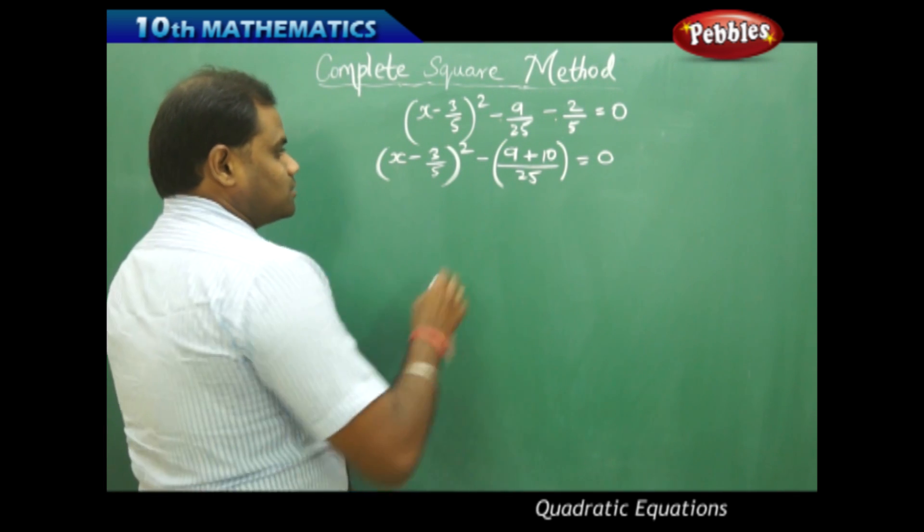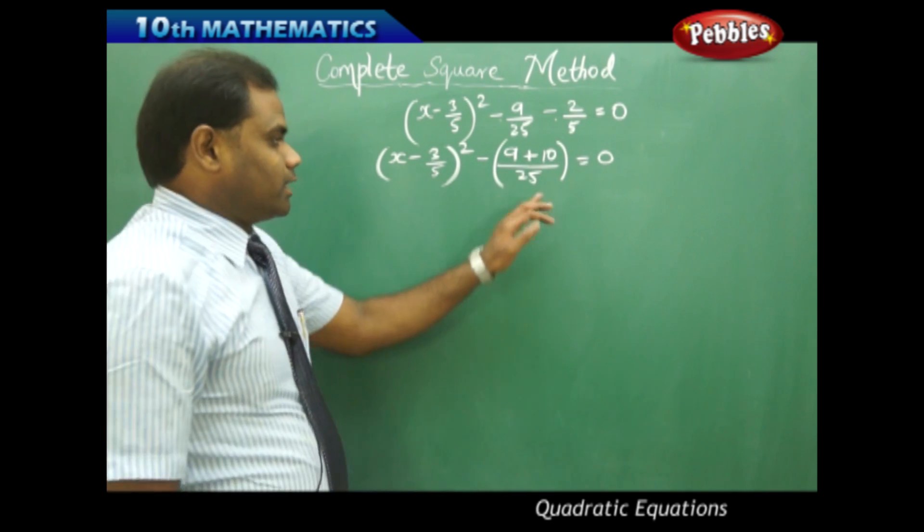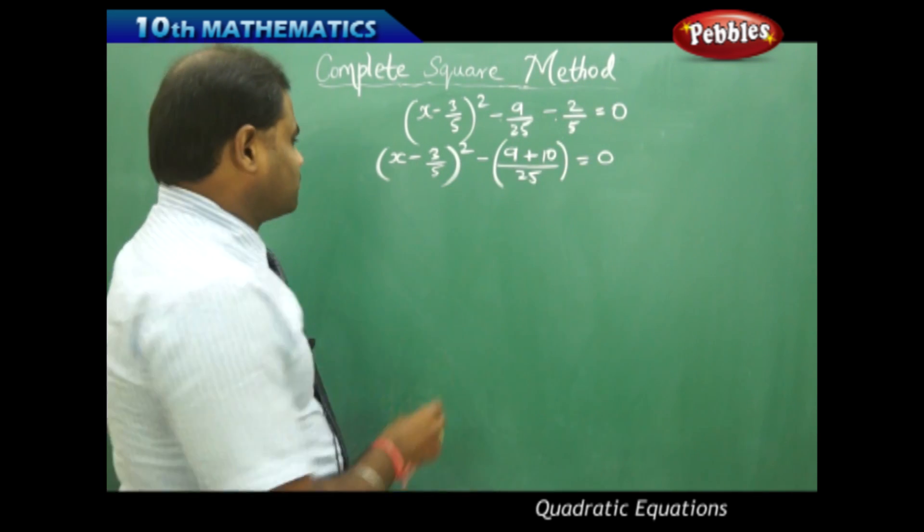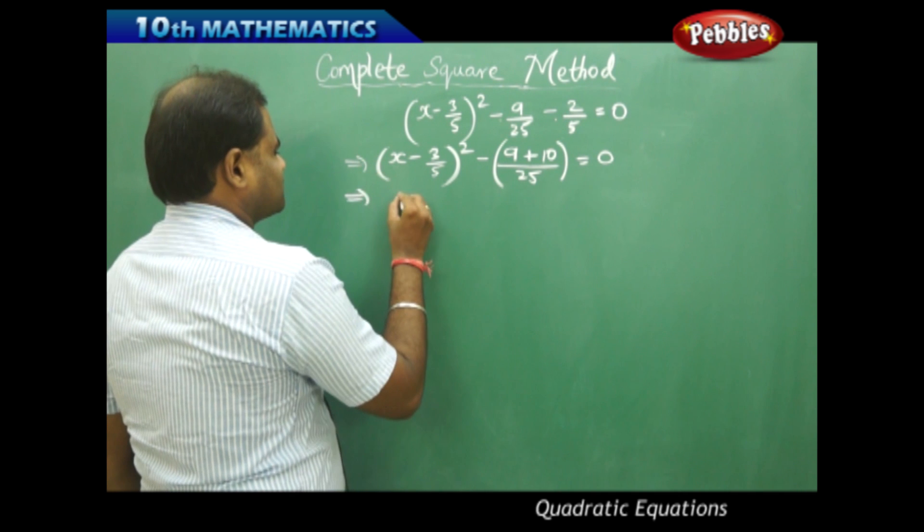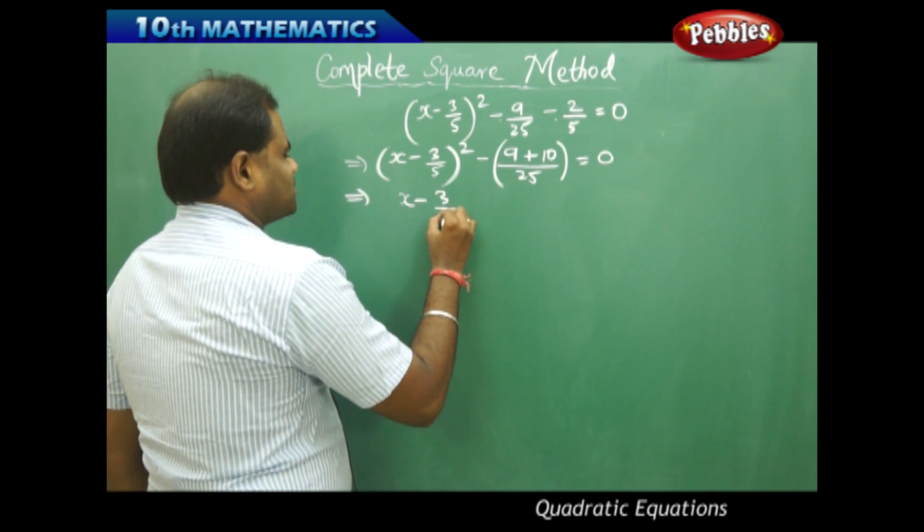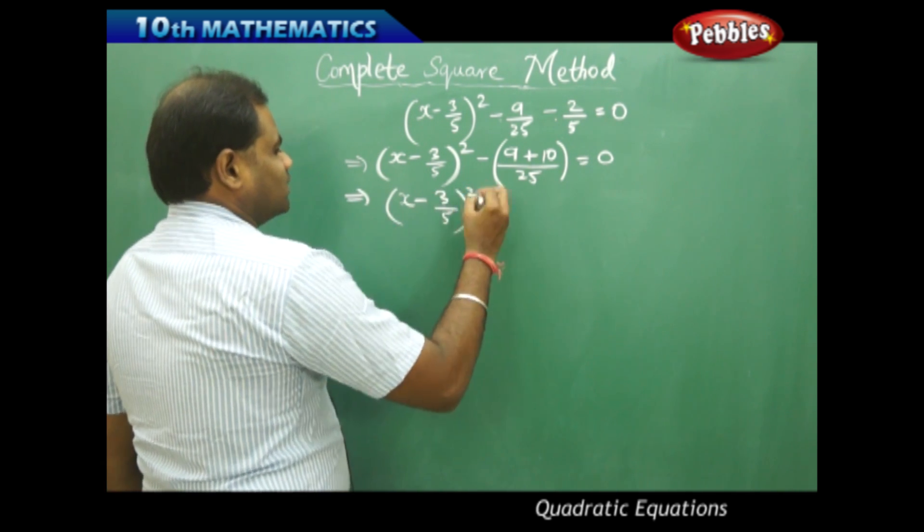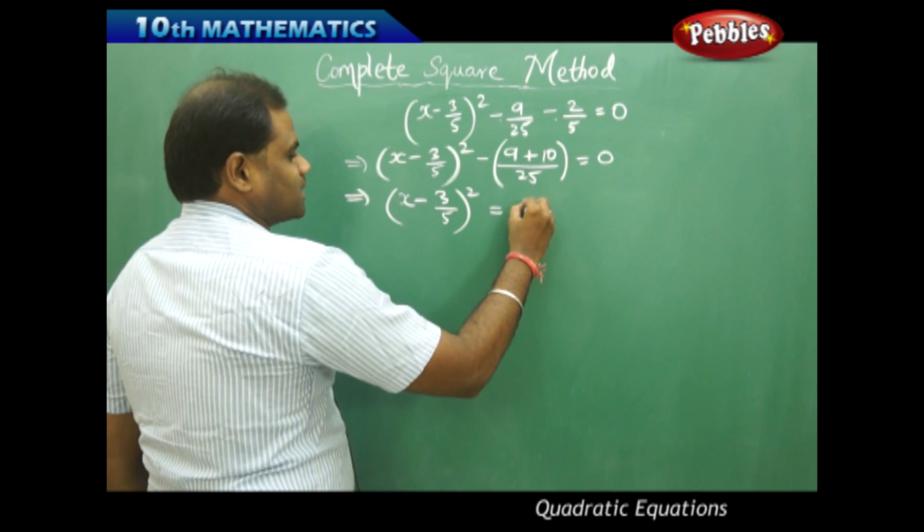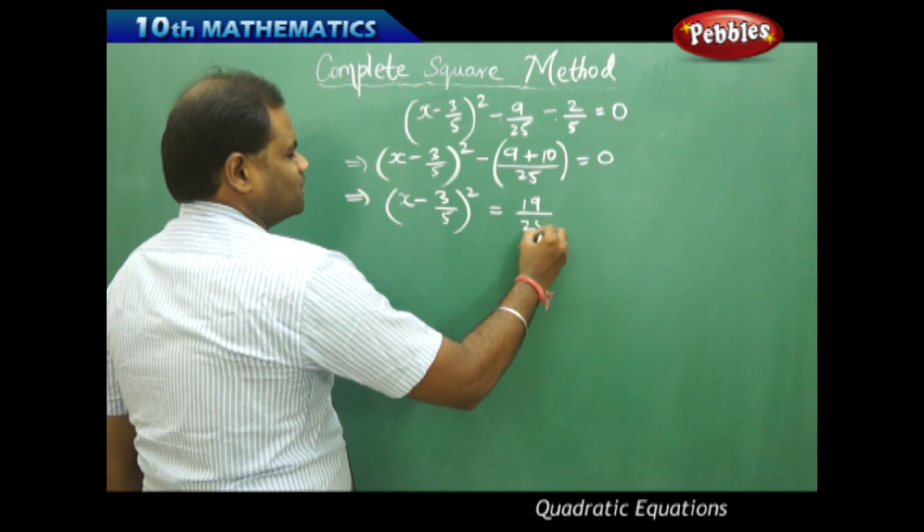Now this reduces to an equation where the constant is taken to the right, therefore from here this implies (x - 3/5)² will be equal to 10 plus 9, 19 over 25.